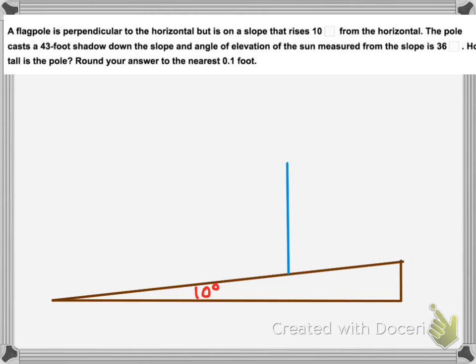We can begin by drawing a picture. So there's our 10 degree slope, there's our flagpole, again perpendicular to the horizontal. Now this question probably could be phrased a little bit better. The angle of elevation being 36 degrees is a little confusing here. Normally we measure angle of elevation with respect to the horizontal.